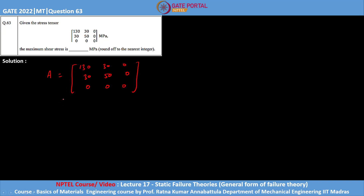If lambda is the eigenvalue for this matrix, it will satisfy the condition determinant of (A minus lambda·I) equals zero. With this condition we will find the value of lambda, and that lambda value will be the principal stress for this stress tensor. Here I is the 3×3 unit matrix. Solving (A minus lambda·I) gives us the matrix [[130−λ, 30, 0], [30, 50−λ, 0], [0, 0, −λ]] equals zero.